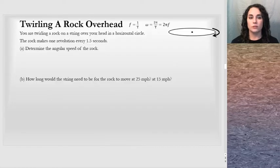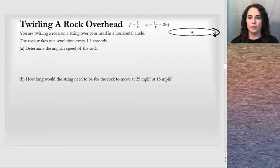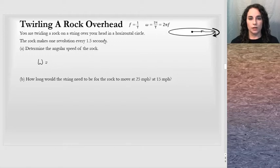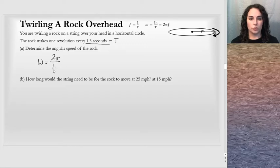The problem we're going to practice these concepts on is the twirling-a-rock-over-the-head problem. You are twirling a rock on a string over your head in a horizontal circle. There's a sketch showing the horizontal circle from the side, with the center of motion and the string with radius r. The rock goes around at constant speed and makes 1 revolution every 1.5 seconds.